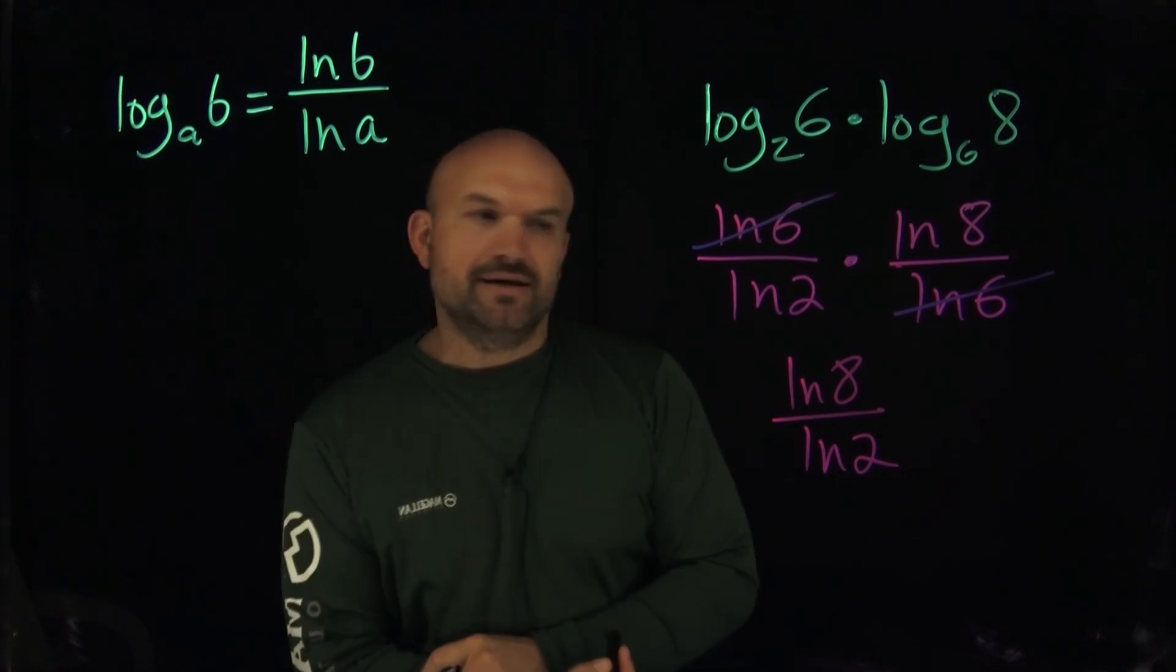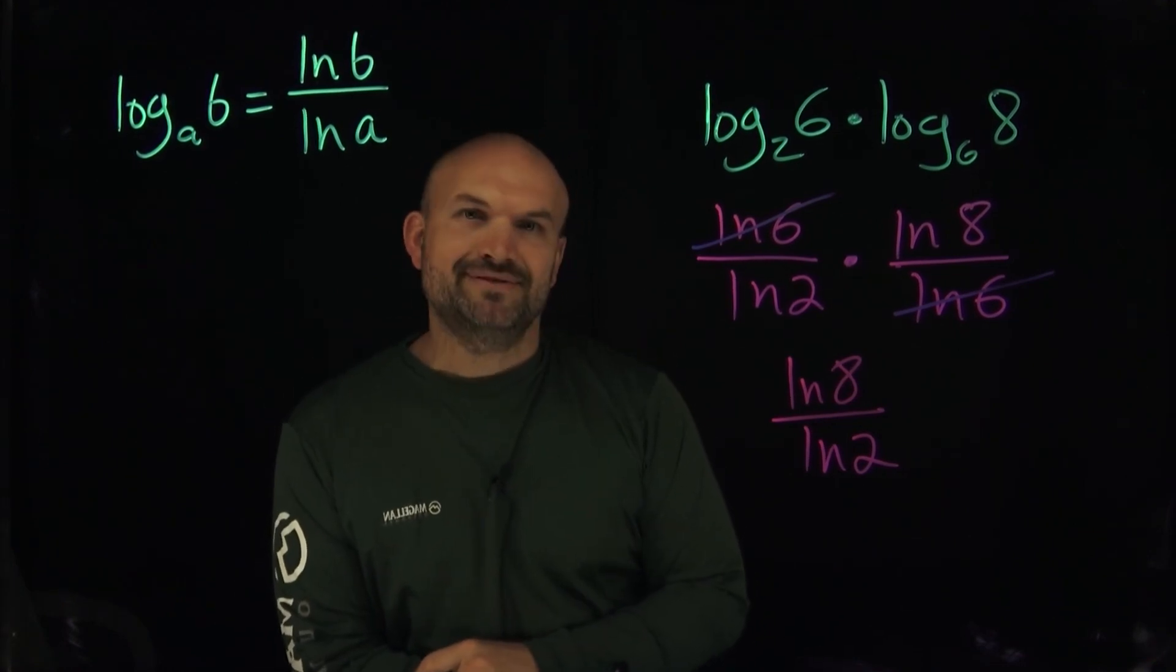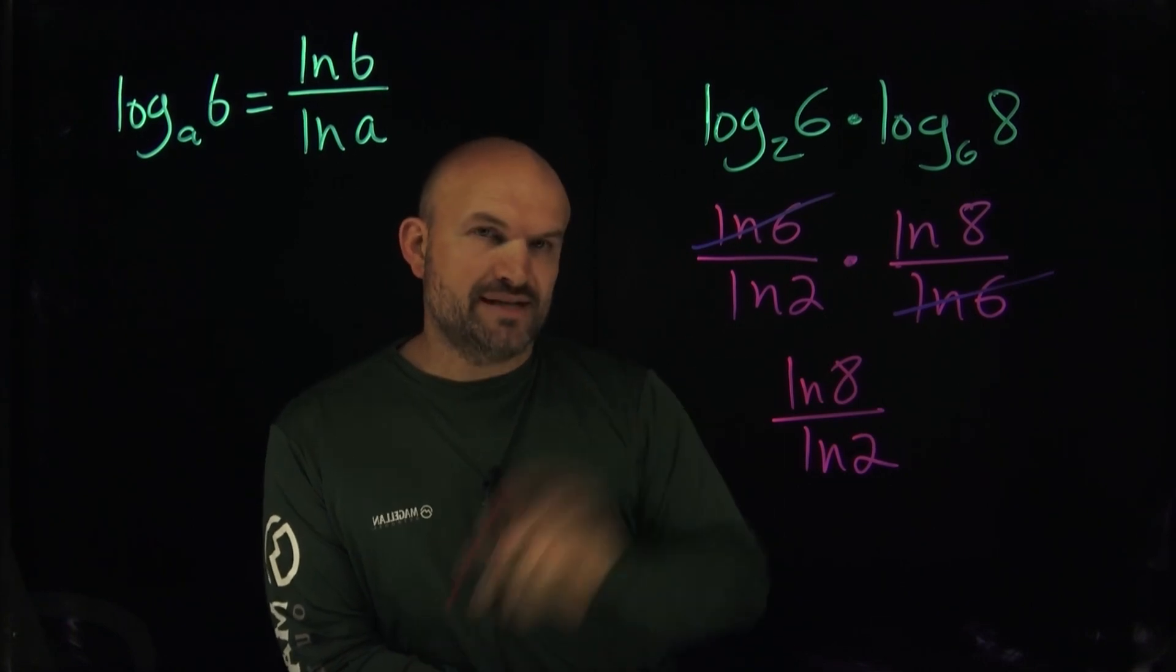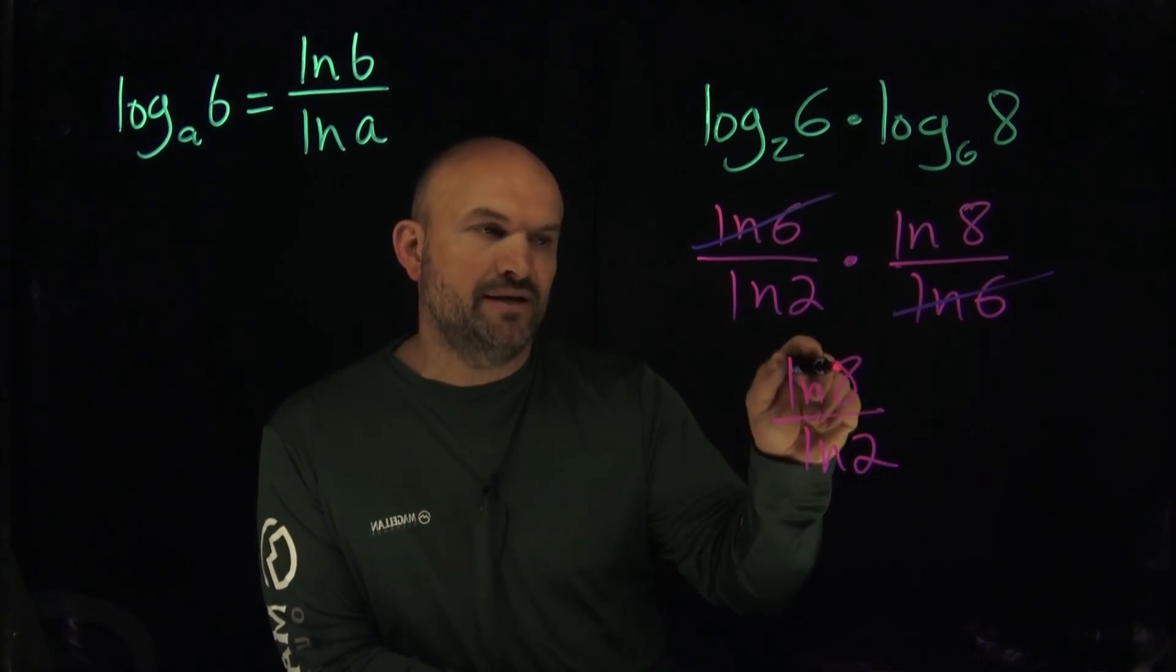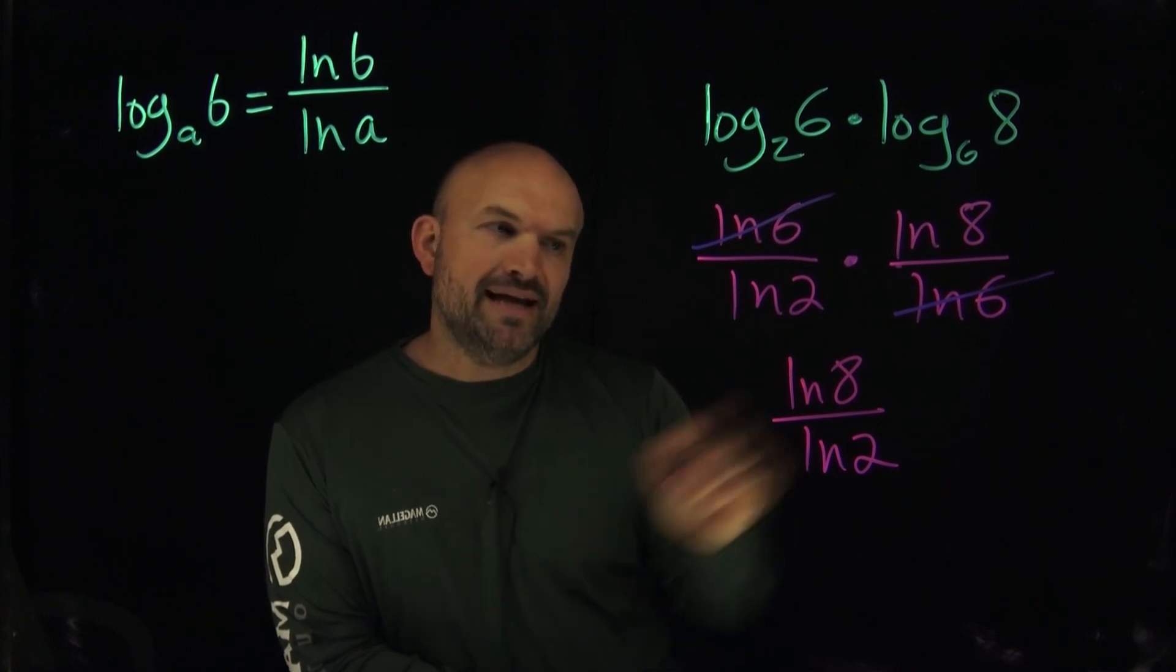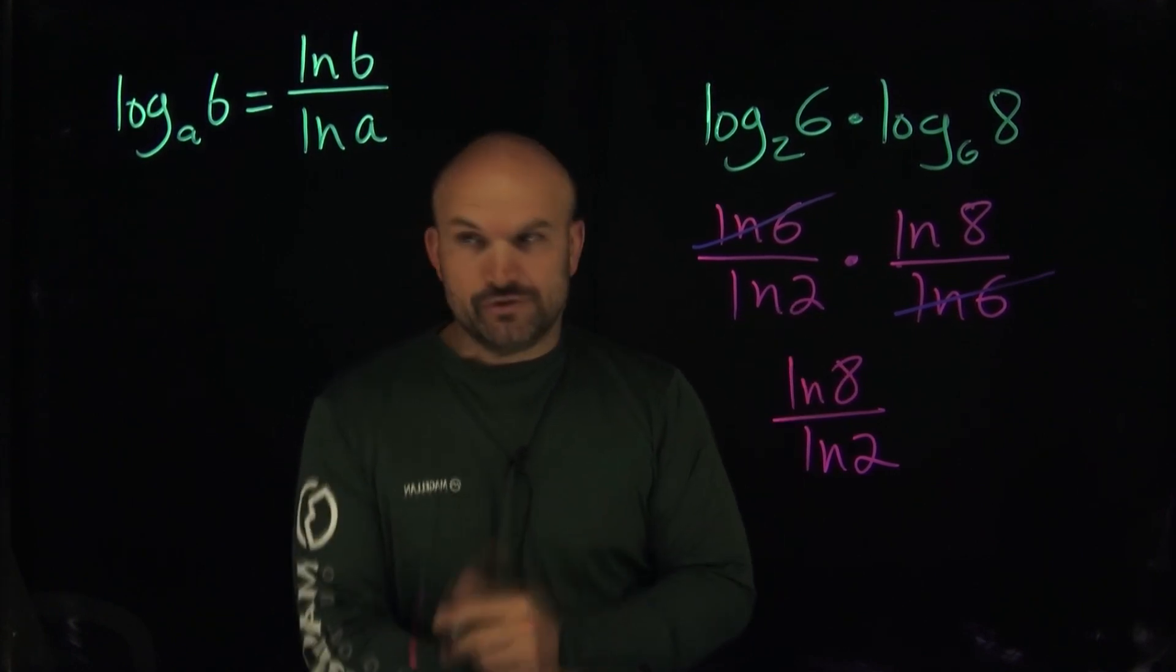Now, in this case, you still might be stuck and you might be saying, well, I don't know what to do from here. Like still kind of stuck. Like what do you do? So one thing that you could do is look at the arguments and recognize that there's a relationship between 8 and 2, right? And that relationship here is that 8 can be rewritten as 2 cubed.